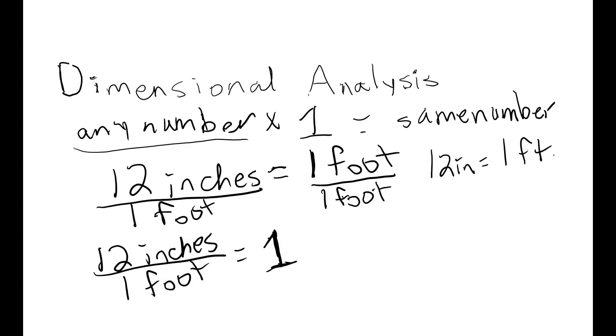We can do this the same way. 12 inches equals one foot. Divide both sides by 12 inches instead. And we get 12 inches divided by 12 inches is 1 equals one foot over 12 inches.